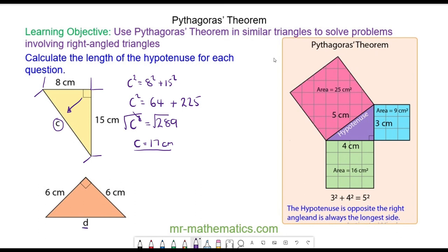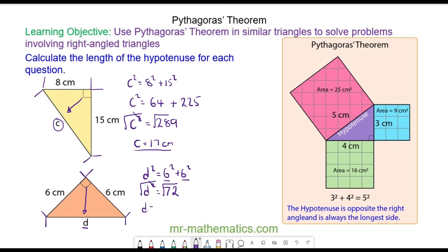If you haven't already done so, do you want to try and work out the length of d? Pause the video and you can resume it when you are ready. For d, this is still the hypotenuse because it is opposite the right angle. So the area of the square on this side, d squared, is equal to the area of the squares on the other two sides: 6 squared plus 6 squared. So d squared equals 36 plus 36, which is 72. Square rooting both sides, the length of d will be approximately 8.49 centimetres.